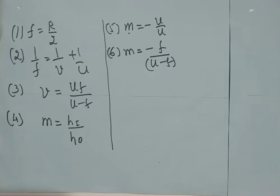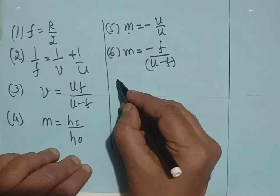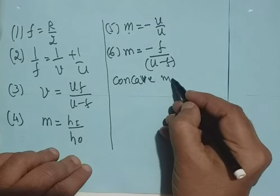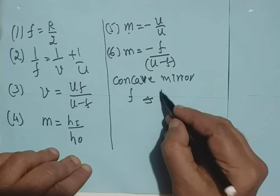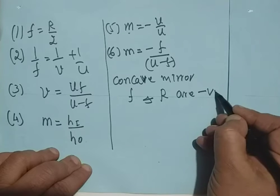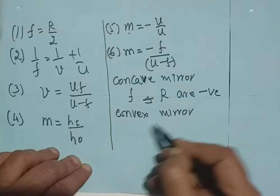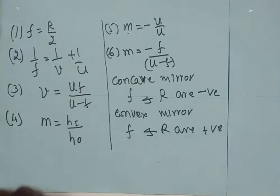For convex mirror, focal length and radius of curvature are both positive. We always follow this sign convention in applying the sign conventions in this session.